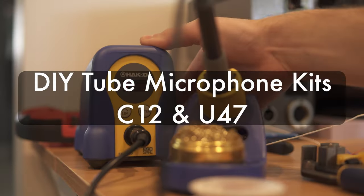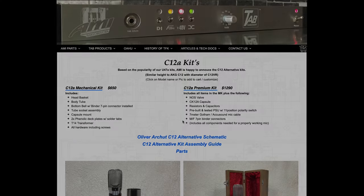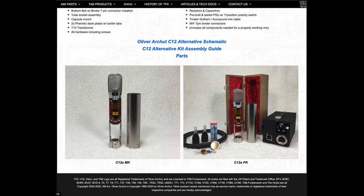I've built a lot of audio gear in the past, but this will be my first time building tube microphones. I found these kits through TAB Funkenwork. I bought two C12As and two U47s.